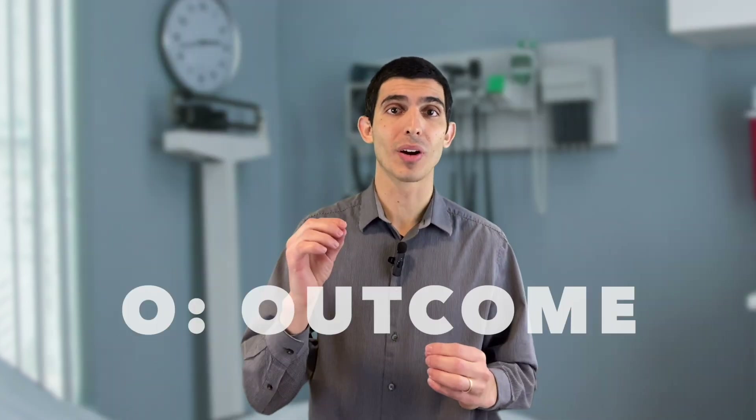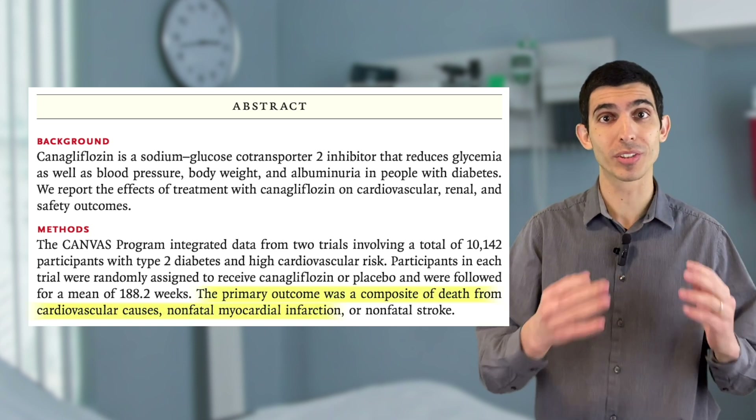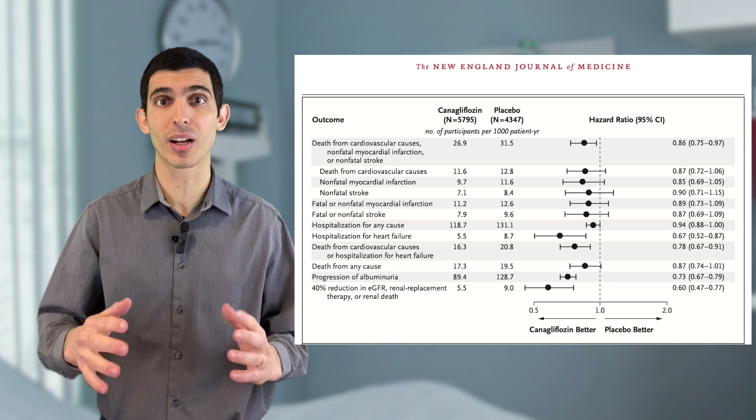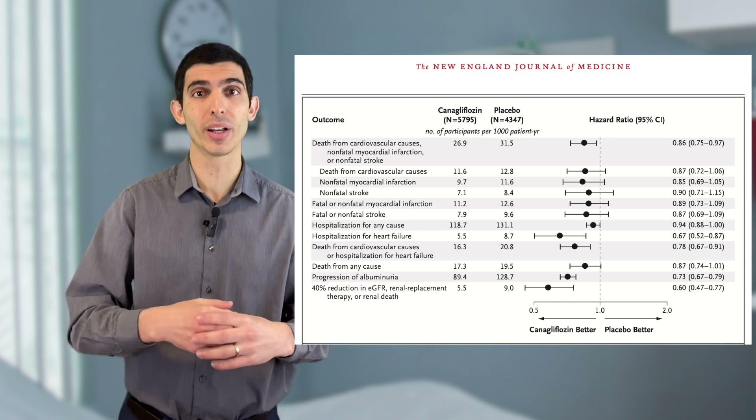Next we go to the letter O — O is for outcome. In a randomized trial like this one, or even in cohort studies, you generally have lots of different outcomes. How detailed you want to be depends on the context. If you're just trying to get a quick sense of the paper, focus on the primary outcome and a few important secondary outcomes. In the Canvas trial, the composite outcome of death, stroke, or myocardial infarction was the primary endpoint. Looking at table three of that trial, they also analyzed hospitalization, death, myocardial infarction, progression of albuminuria, and many other outcomes.